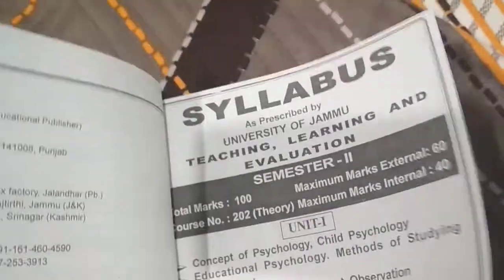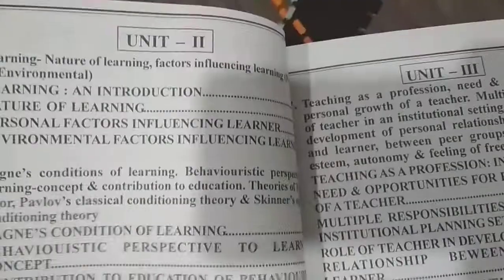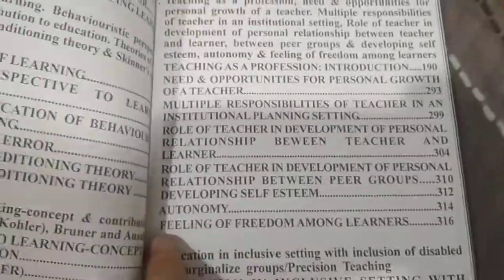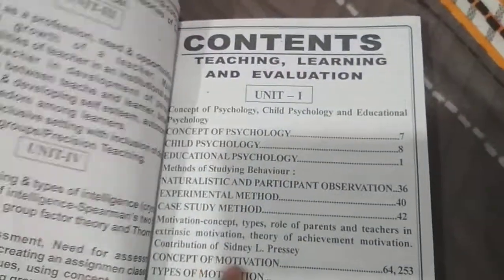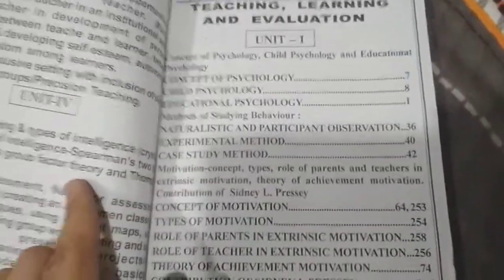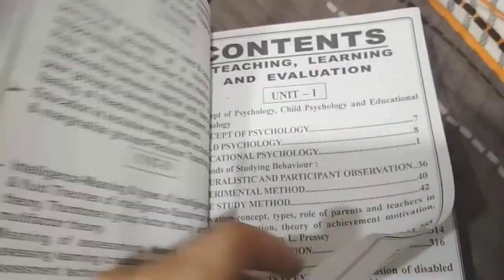Let's check another one randomly. In Unit 3, Feeling of Freedom Among Learners is listed at page 316. So at page 316, the topic Feeling of Freedom Among Learners is given and it's discussed in detail, very easy for the reader to understand. Page numbers are mentioned in front of the contents so that you can easily navigate, and the contents cover everything which was there in the syllabus.